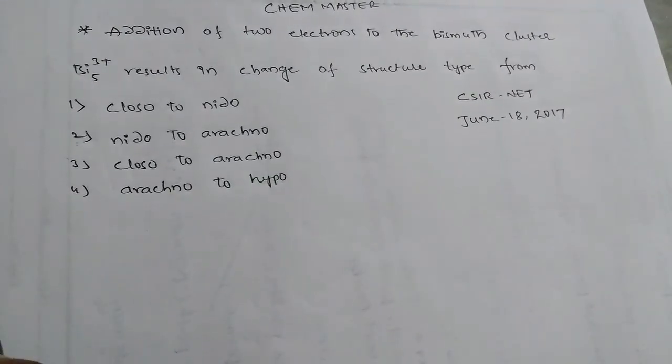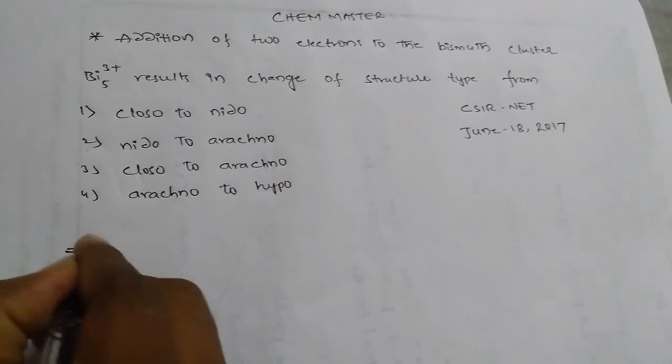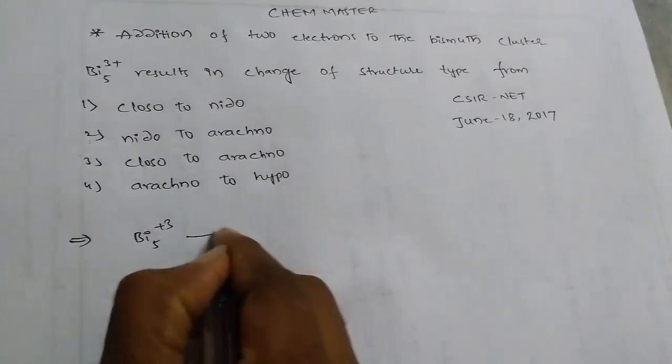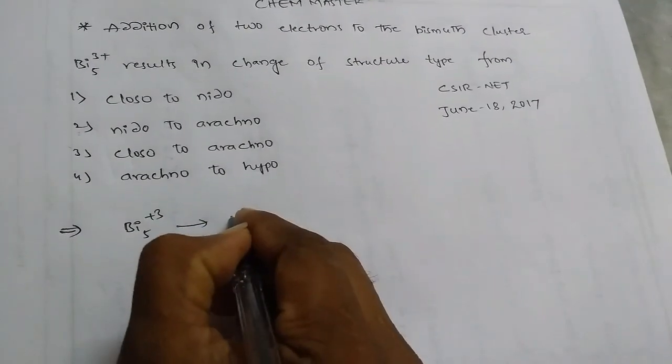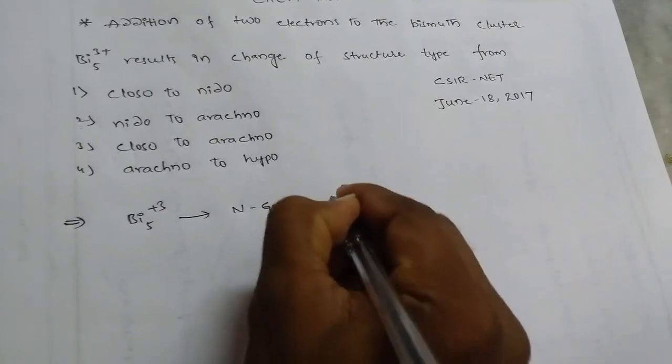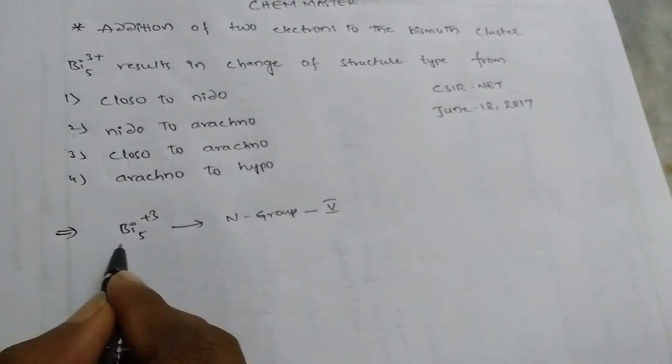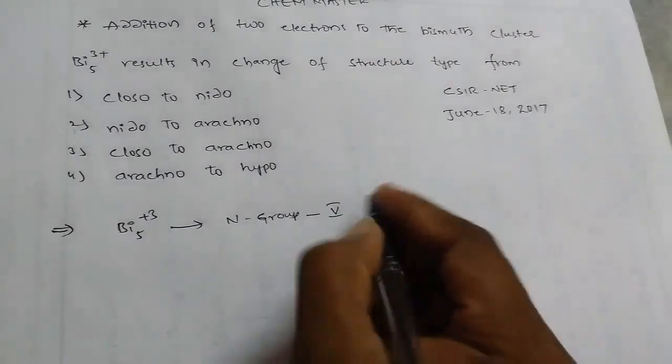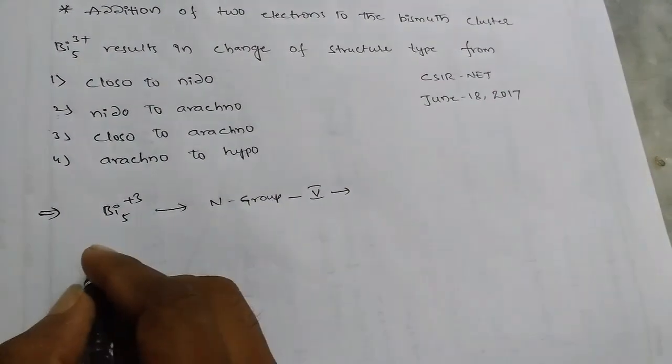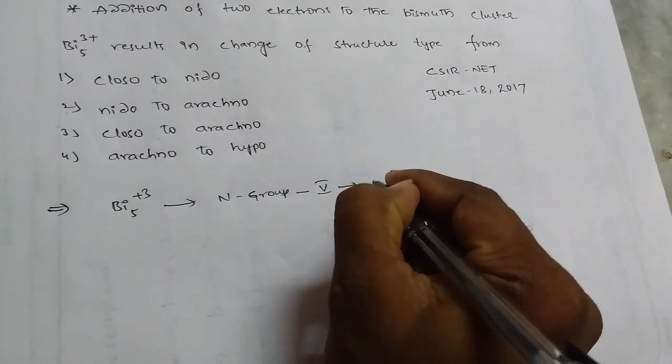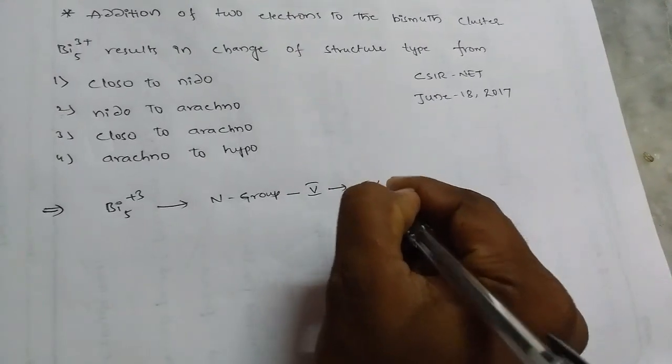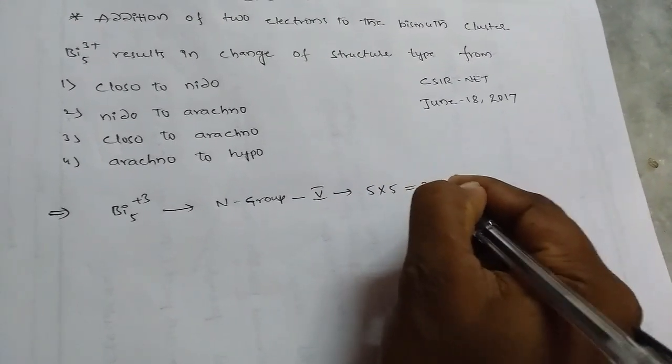So we have bismuth cluster, and bismuth belongs to the nitrogen group, so that is a fifth group element. We know that fifth group element, and we have five bismuths, so five into five, totally twenty-five electrons it has.